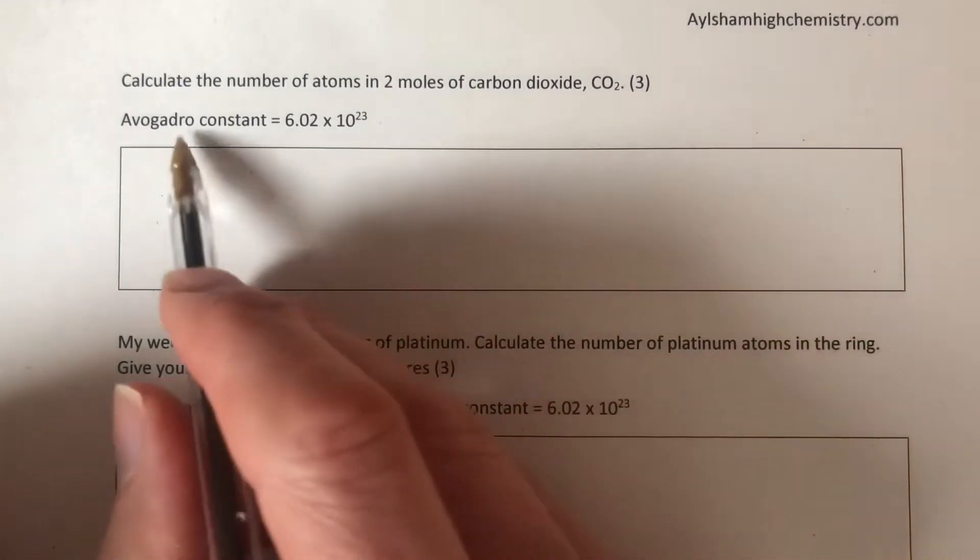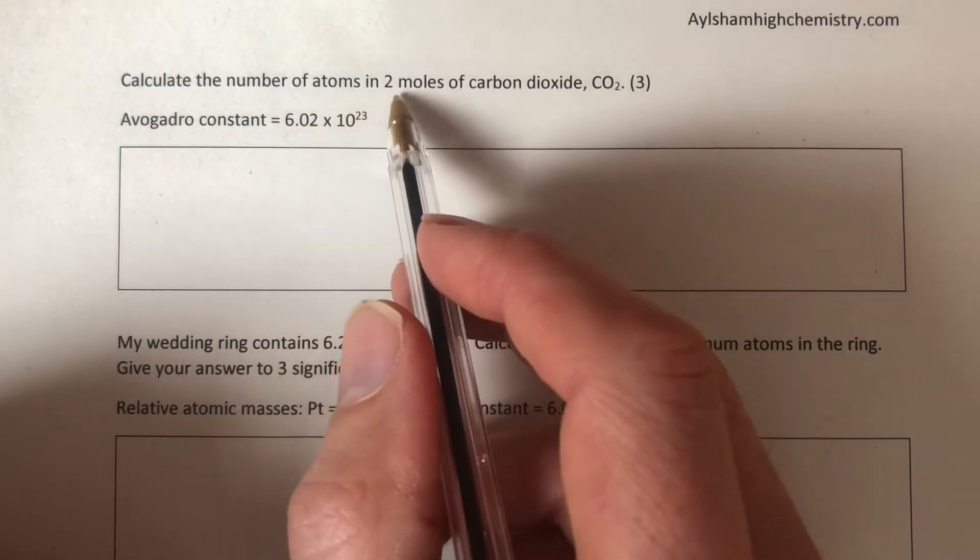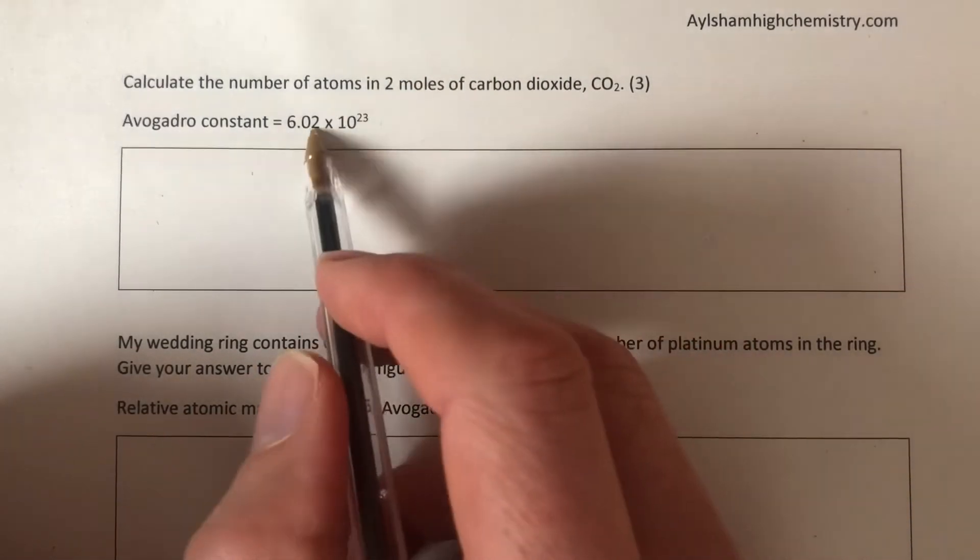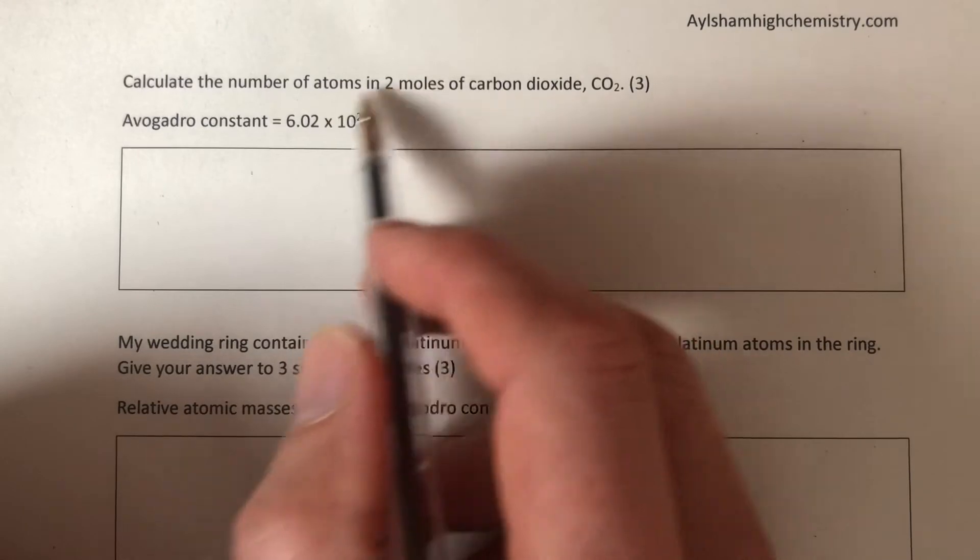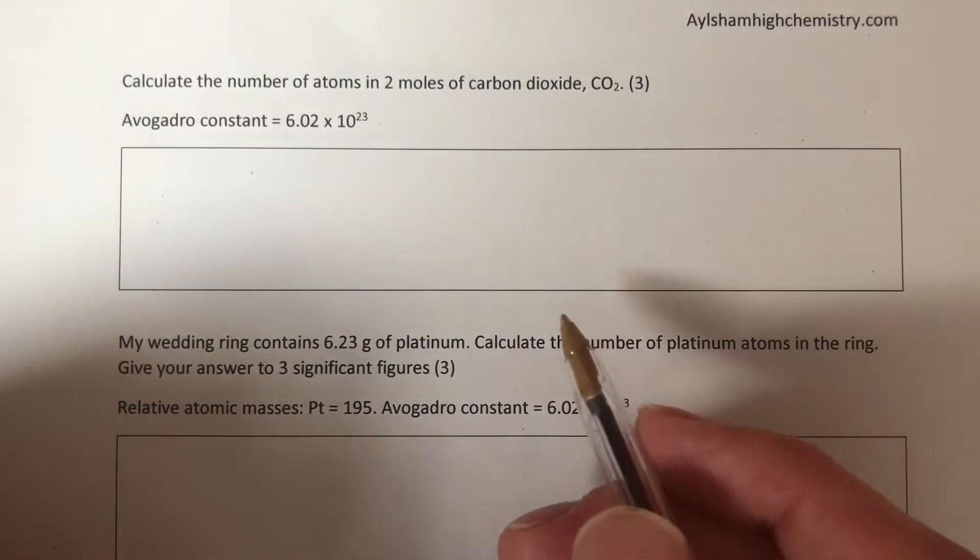A constant is a name we give to a number, and here's a constant. So I said how many eggs in two dozen, you said 24, two times 12. I've got two moles here, I've got our Avogadro constant. Simply, we are doing these two numbers multiplied by each other, and that's these questions in its simplest form.